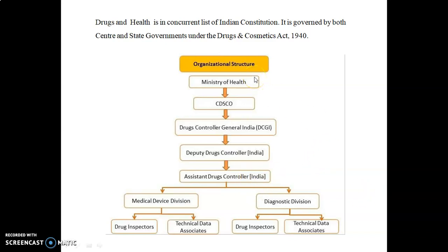Let us see about the organizational structure. It is controlled by the Ministry of Health, CDSCO, and Drug Controller General of India (DCGI), Deputy Drug Controller of India, and Assistant Drug Controller. The Assistant Drug Controller's responsibilities bifurcate into two divisions: the Medical Device Division and the Diagnostic Division. Both the Medical Device and Diagnostic Devices are further controlled by Drug Inspectors and Technical Data Associates.